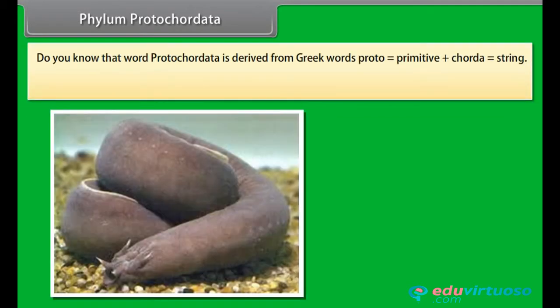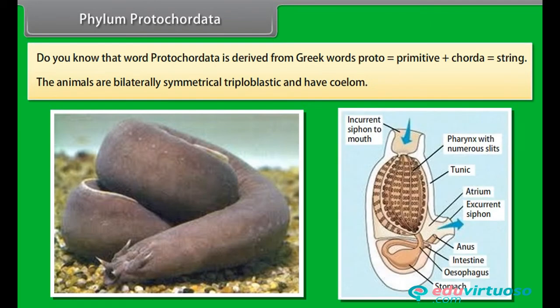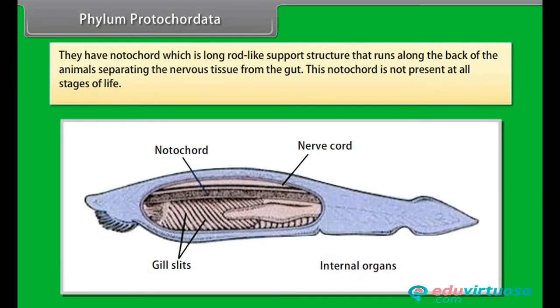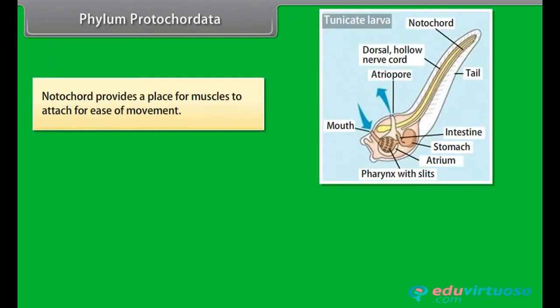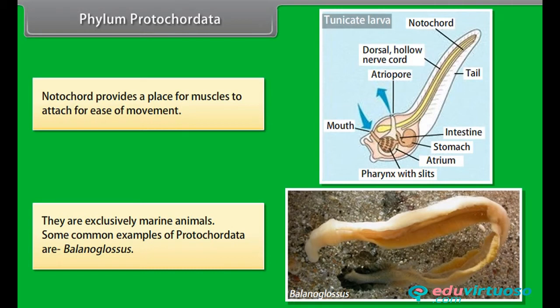Phylum Protocordata. The word Protocordata is derived from Greek words proto, meaning primitive, plus corda, meaning string. The animals are bilaterally symmetrical, triploblastic, and have coelom. They have a notochord, which is a long rod-like support structure that runs along the back of the animals, separating the nervous tissue from the gut. This notochord is not present at all stages of life. Notochord provides a place for muscles to attach for ease of movement. They are exclusively marine animals. A common example of Protocordata is Balanoglossus.